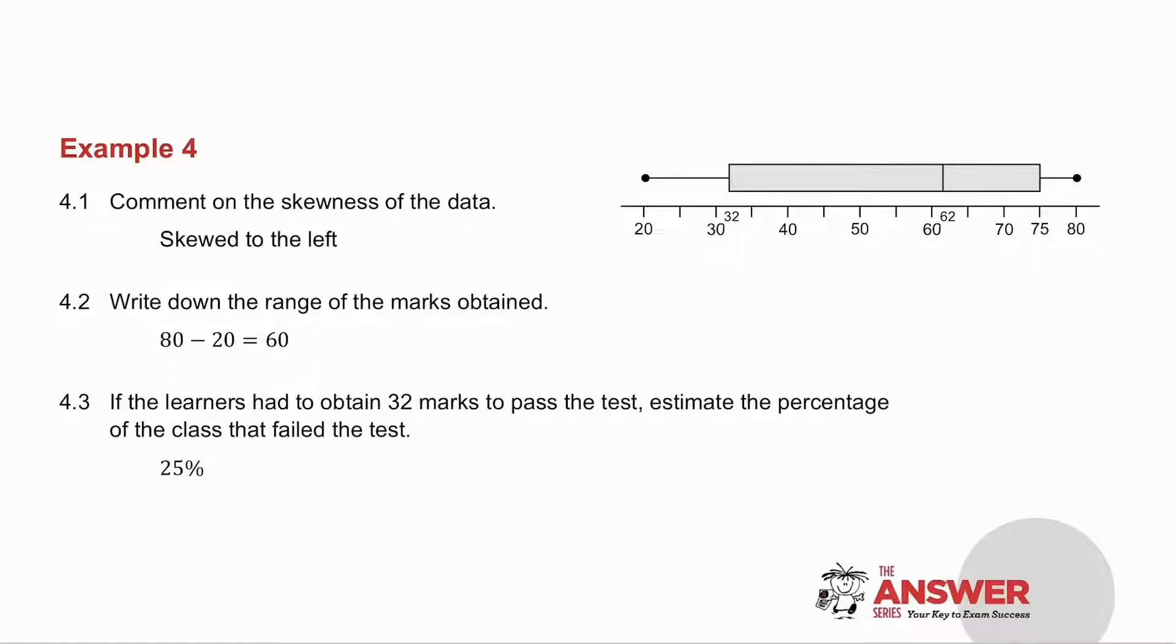4.3, if the learners had to obtain 32 marks to pass the test, estimate the percentage of the class that failed the test. Well, there's my 32. That is the lower quartile. So the people who failed fit into this quartile. Remember, quartile is 25%. So what percentage were below 32? 25%.